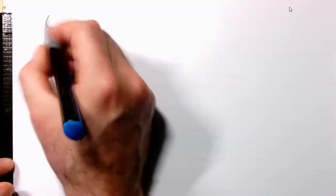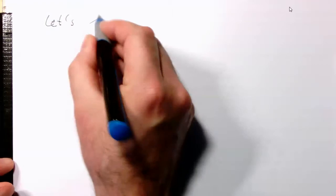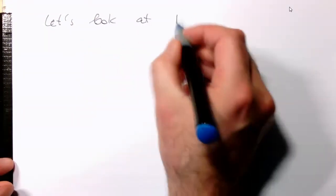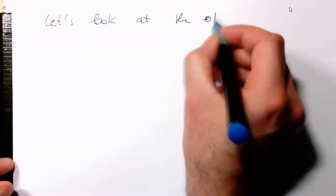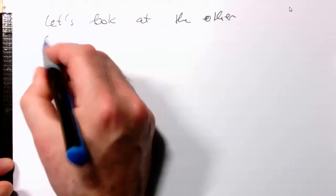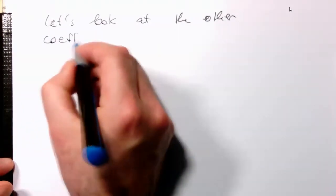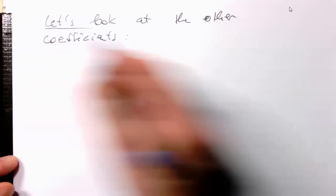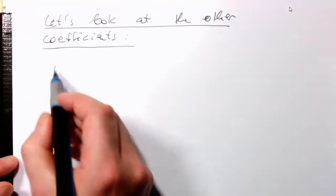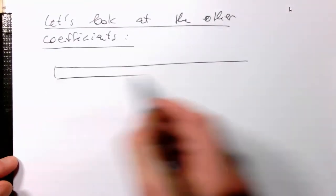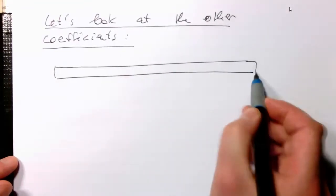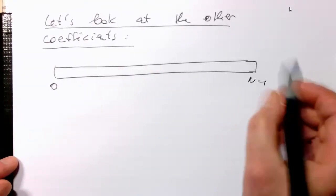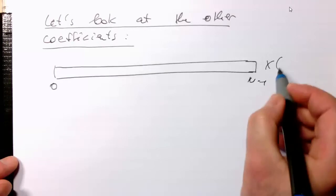So let's look at the other coefficients. This is our whole frequency sample spectrum here. So it starts at 0 to n minus 1 and that's our x of k.